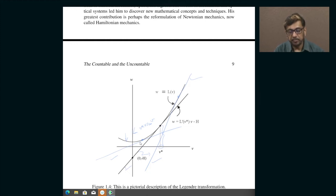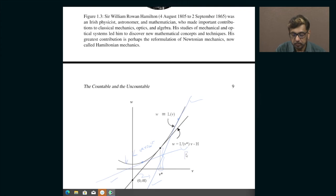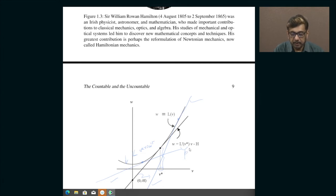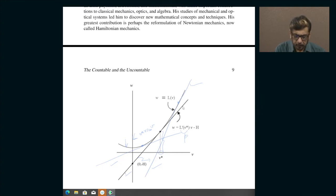A straight line is described by two numbers: the slope and the y-intercept. That is how we describe straight lines analytically. The slope of the straight line tangent to L of V is clearly L-prime of V, which happens to be exactly P. Remember that L-prime of V star equals P. If I specify the slope of the straight line, that is equal to the derivative of L of V at V star. The y-intercept — the point at which the straight line intersects the vertical axis — I call zero comma minus H.